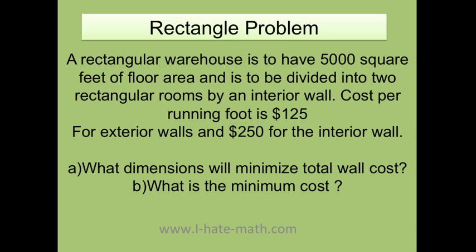A rectangular warehouse is to have 5,000 square feet of floor area and needs to be divided into two rectangular rooms by an interior wall. The cost per running foot is $125 for the exterior walls and $250 for the interior wall. The question is, what dimensions will minimize the total wall cost and what is the minimum cost? Let's do it.